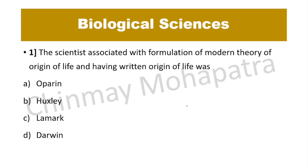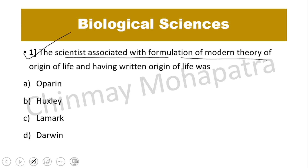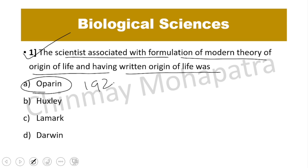Question number 1. The scientist associated with the formulation of the modern theory of origin of life, and having written 'Origin of Life', was? The right answer is Oparin, 1920.